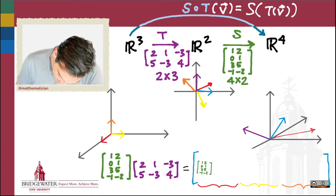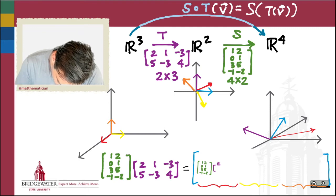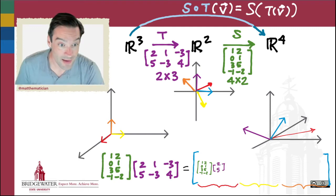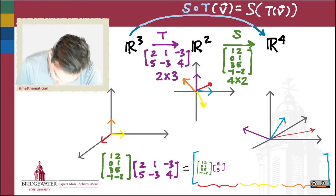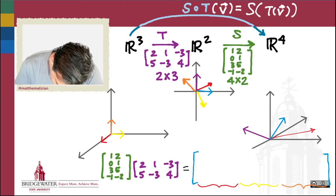When I do that, what am I really doing but taking twice the first column of that matrix added to five times the second column of that matrix? So if I write that out: twice the first column added to five times the second column.